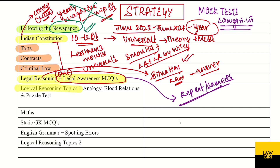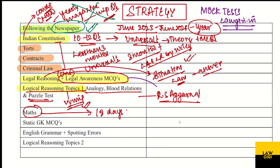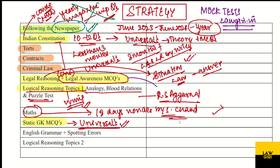After that, for reasoning, there are important topics — Analogy, Blood Relations, and Puzzle Tests. For the book, you will do Verbal and Non-Verbal Reasoning by R.S. Agarwal. For Maths, you will do 18 Days Wonder by S.C.C. There are also Maths classes available at Lawgiri.in. For Static GK MCQs, you will solve them in Universal's — the same MCQs are expected. First cover all Static GK topics in Universal's, then if you have time you can also do a book from Arihant. For English grammar, do spotting errors using the book by S.B. Bakshi.